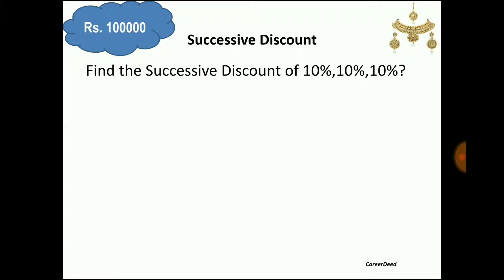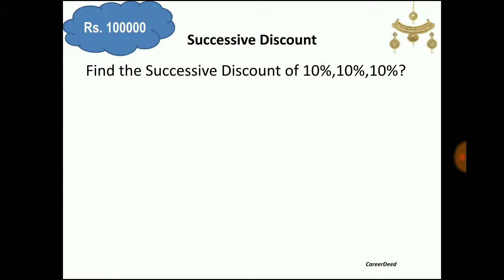Assume you don't have 1 lakh rupees in your hand, so you ask for a discount from the shopkeeper. He initially gives a 10% discount over 1 lakh rupees. A 10% discount means you have to pay the remaining 90%, so 90% of 1 lakh rupees is 90,000 rupees.